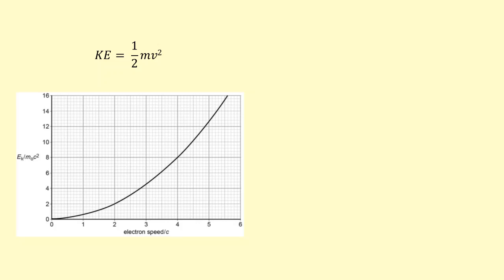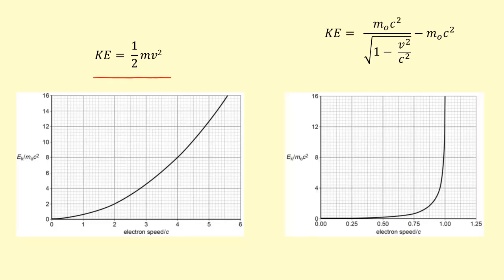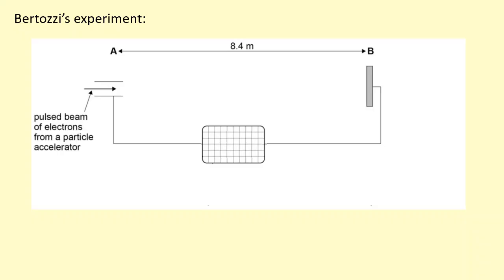This is a classical Newtonian equation for kinetic energy. However, at higher speeds near those approaching the speed of light, you need to start using the relativistic equation. But what is the evidence for this equation here? In Bertozzi's experiment...